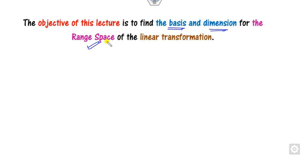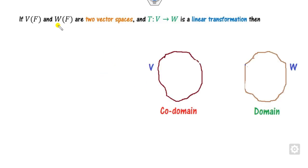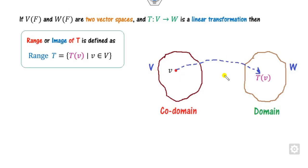First we will try to understand what the range space is. Say you have two vector spaces V and W, and the transformation is from V to W. You can consider any element in the domain, that is V, and look at its image T(V). The collection of all those images is called the range.